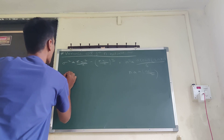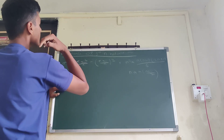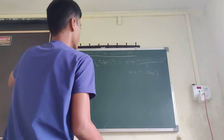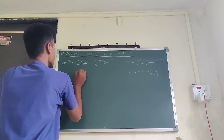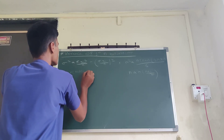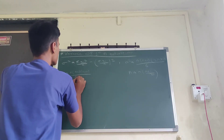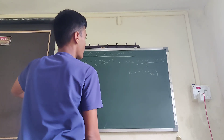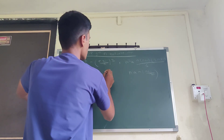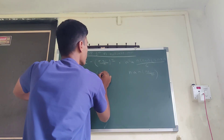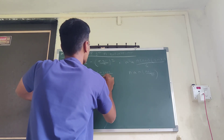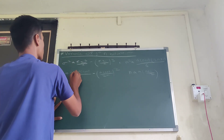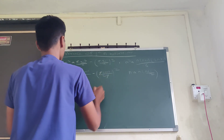We substitute these formulas into the variance equation. The sum of the first n squared natural numbers upon n gives n(n+1)(2n+1) upon 6n — the n cancels — minus the sum of n natural numbers n(n+1) upon 2n — the n cancels — leaving (n+1) in the bracket.